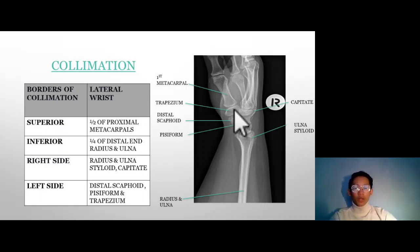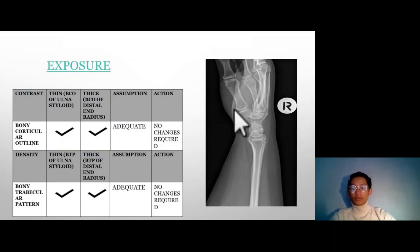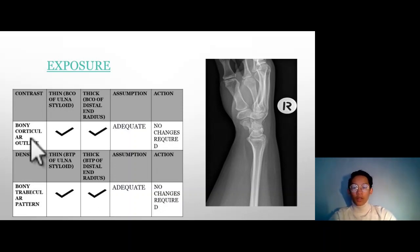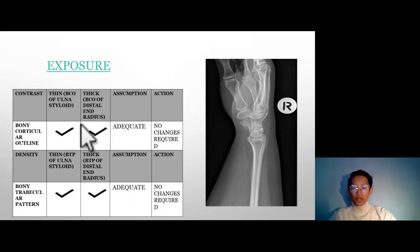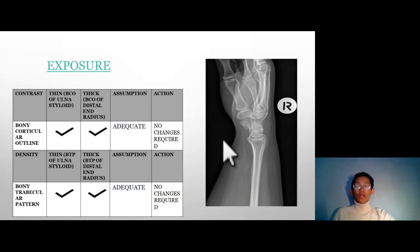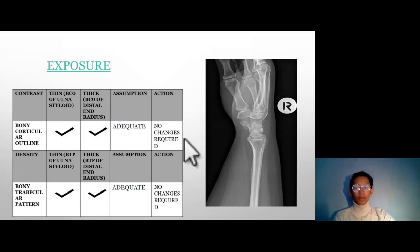Next, the exposure factors, starting with contrast, which is assessed by the bony cortical outline. For the thin structure — the ulna styloid — and the thick structure — the distal radius — the cortical outlines are clearly visible. Therefore, the contrast is adequate and no changes are required in this radiograph.